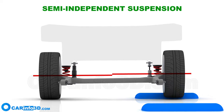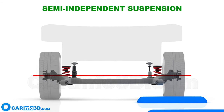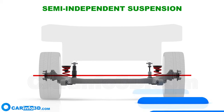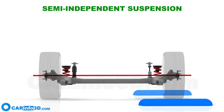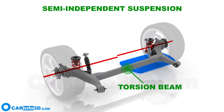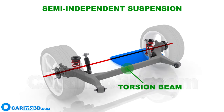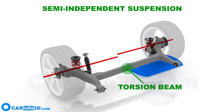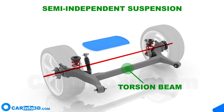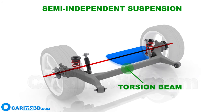A semi-independent suspension system is an intermediate link between the dependent and the independent systems. A torsion beam is used in place of the rigid beam in this arrangement, and because of its capacity to twist, it lessens the dependency of the wheels on a single axle. It is installed on the rear axle of many lower-tier and mid-tier cars.